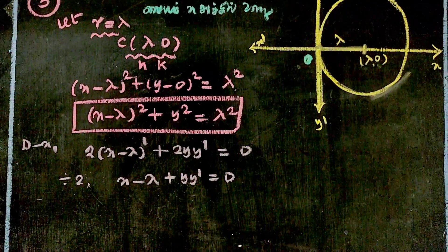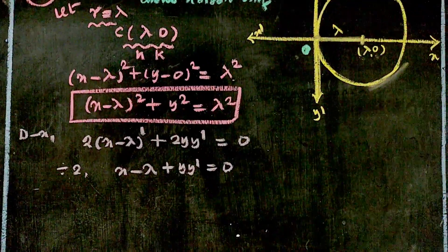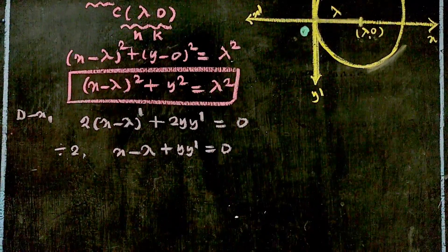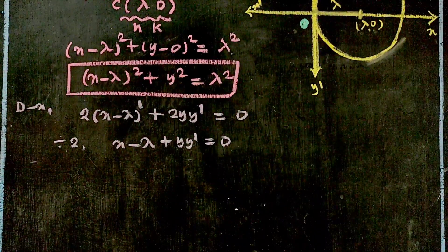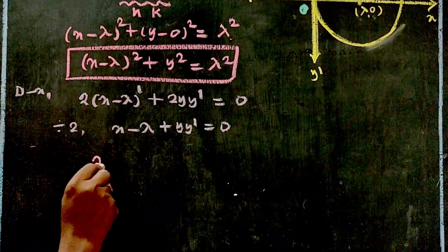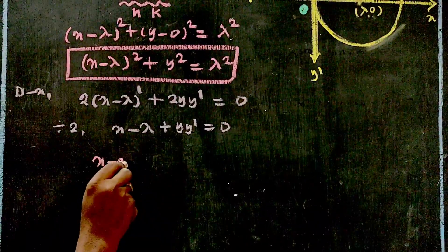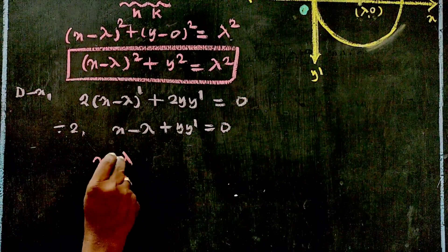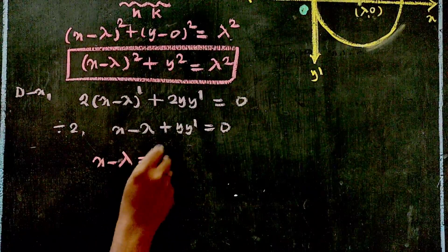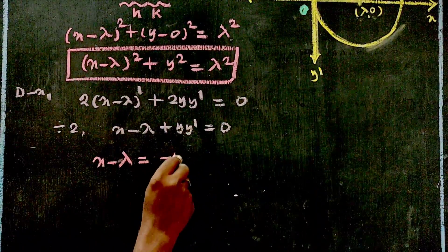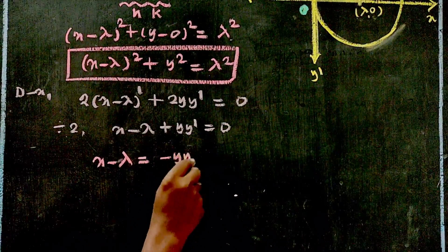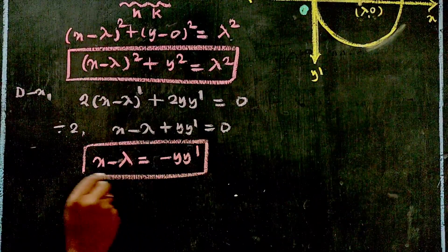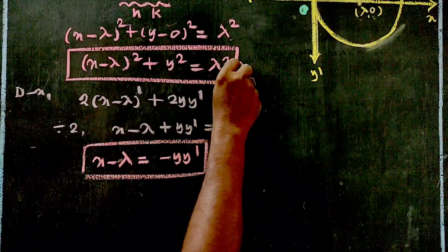From this result, we get x - λ = -y·y', which gives us the value of (x - λ) in terms of y and y'.